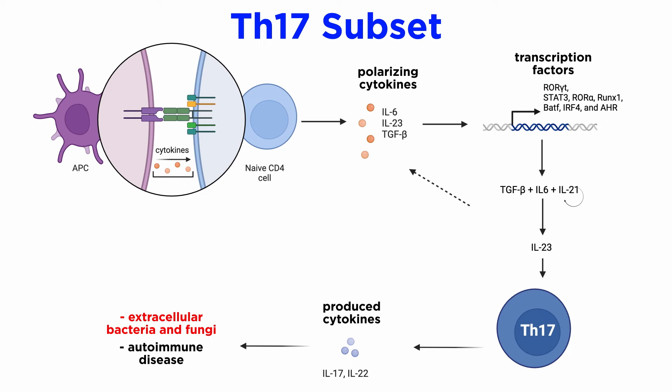Th17 cells play an important role in mounting an immune response against extracellular bacteria and fungi. They are also involved in the generation of autoimmune diseases, and their key effector cytokines include IL-17A, IL-17F, IL-21, and IL-22.